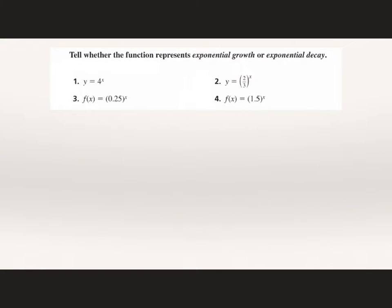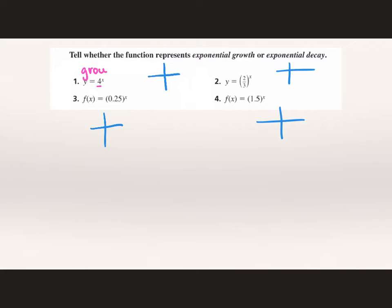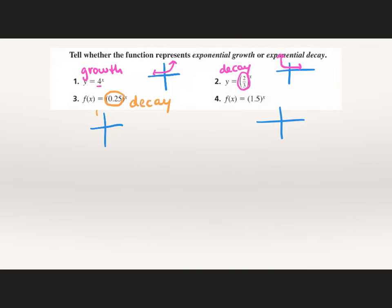We have 4 more examples to graph — just a rough graph, no need to plug in numbers. For number 1, b is 4, which is bigger than 1, so we have exponential growth — the graph goes up. Number 2 has a fraction less than 1, so exponential decay — starts up and goes down. Number 3 has 0.25, less than 1, so decaying — starts high and goes low. Number 4 has 1.5, greater than 1, so exponential growth — starts low and goes up high.